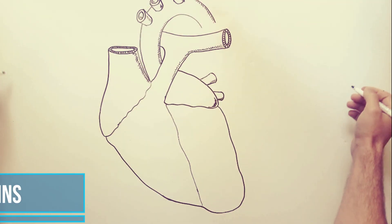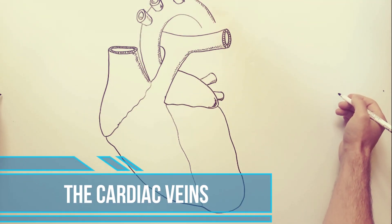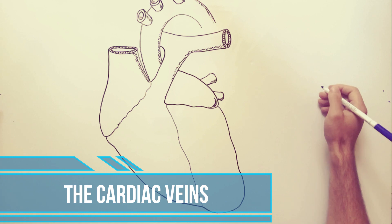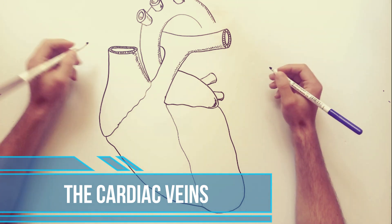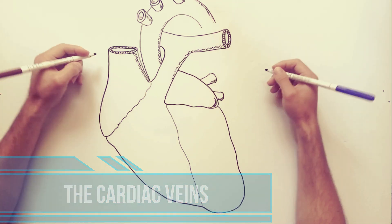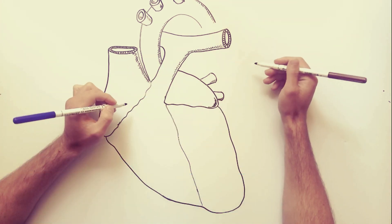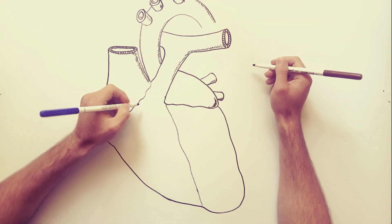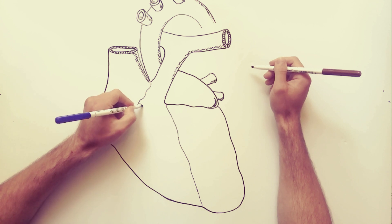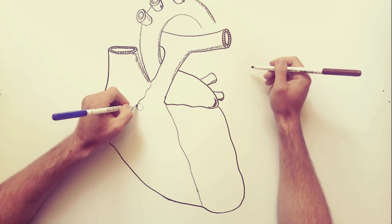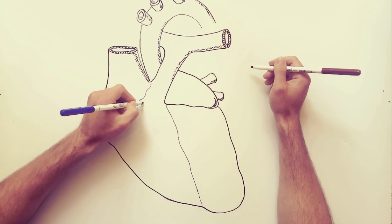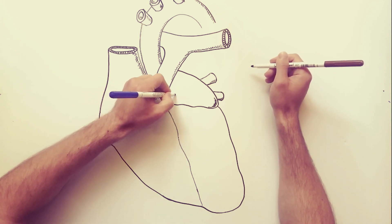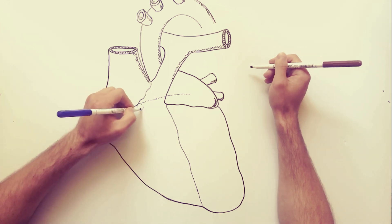Today we will discuss the cardiac veins. The majority of the cardiac veins drain directly or indirectly into the coronary sinus. That's why the coronary sinus is the first structure to be indicated on this drawing.